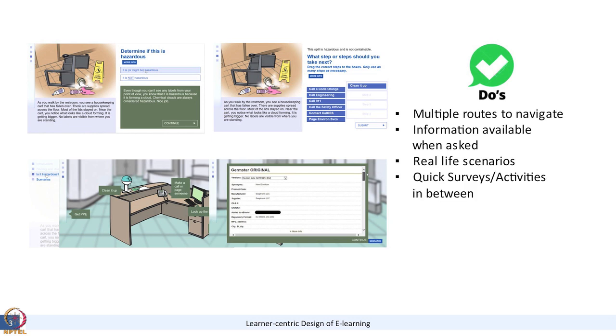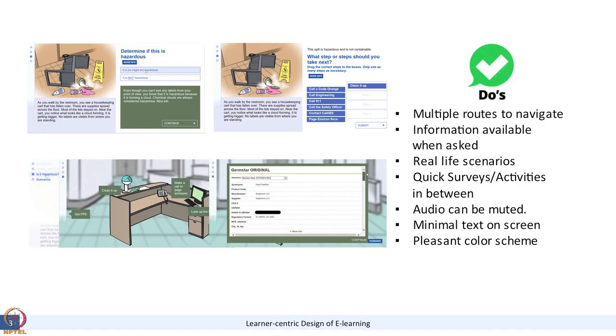Give your audience scenarios from their own background so they can relate. Keep minimal text on screen and also consider color scheme — it may seem unimportant, but a bad color scheme will make learners not even look at the screen. Also be consistent: if you are using a certain font like Calibri or Arial, don't change to something else later. Your screen looks inconsistent throughout the course, and your audience picks up on that — it's not pleasant. So these were examples of good e-learning.